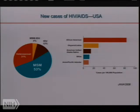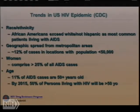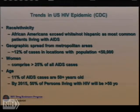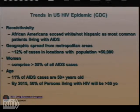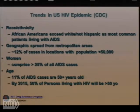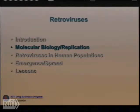It's shifting — about half men who have sex with men, thirty percent heterosexual, and then a smaller number of IVDU and combinations. Some trends worth knowing when appropriating resources: African Americans now exceed white non-Hispanics as the most common patients living with HIV and AIDS. There's a geographic spread out of metropolitan areas. Women comprise over twenty-five percent of all AIDS cases. And by 2015, fifty percent of people living with HIV will be over fifty years of age. It's a maturing epidemic.